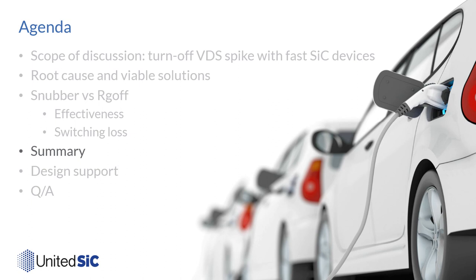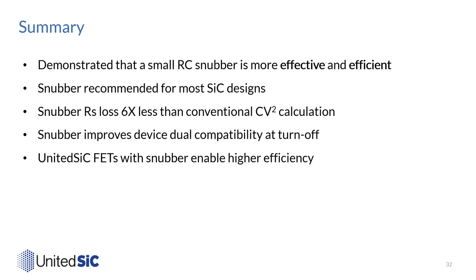Through this webinar, we discussed what is turn-off VDS spike and ringing, its root cause and viable solutions, and compared the effectiveness and efficiency of snubber and RG off. We have demonstrated that a small RC snubber can minimize EMI and switching loss at the same time for fast switching silicon carbide devices. The snubber effects are universal and recommended for most silicon carbide applications. Snubber resistor loss is six times smaller than conventional estimation, so a surface mount resistor can be used. Snubber also improves dual-source compatibility at the turn-off transition. United SiC FETs with snubber enable even higher efficiency.